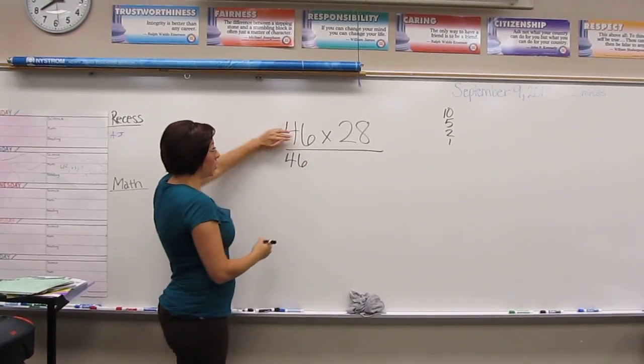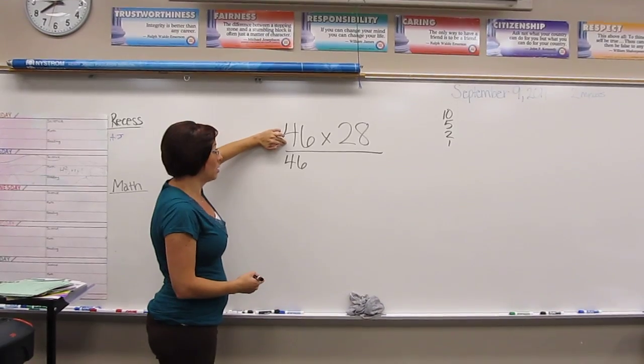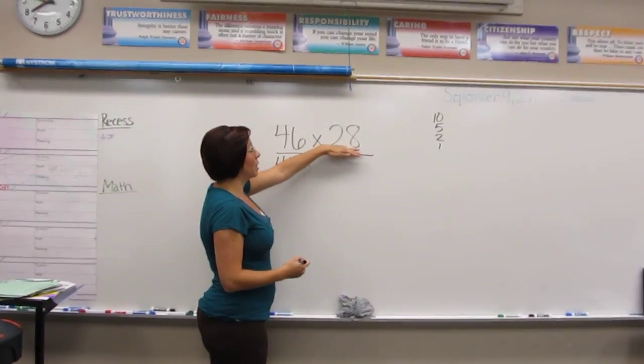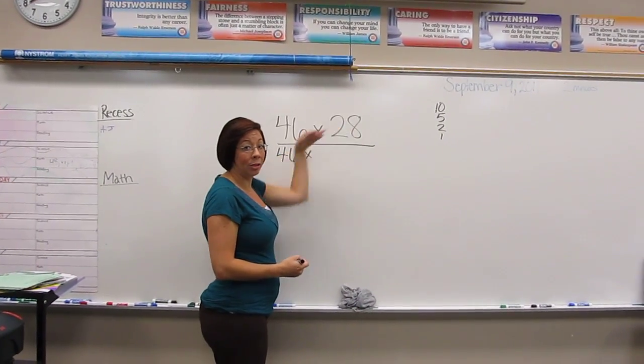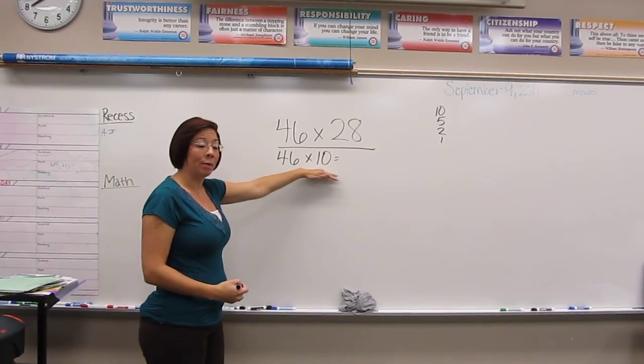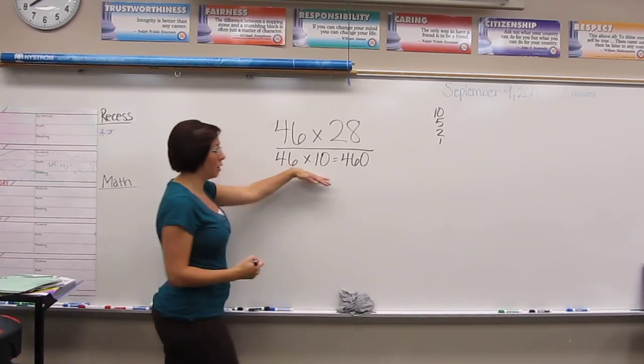For the first part, we choose which number we're going to change. I'm going to keep my first number the same since it's a little bit bigger and I don't want to break that one down. I'm going to break this one down into numbers that would be easier to multiply in my head. For example, 46 times 10 is much easier to multiply in my head. So I multiply that out: 460.